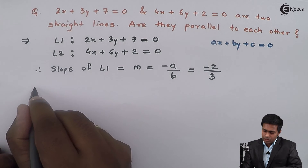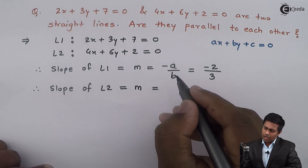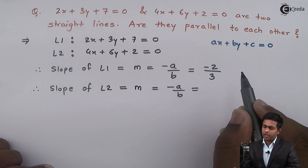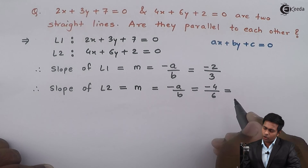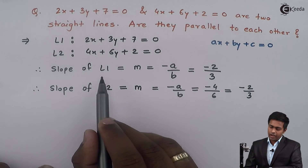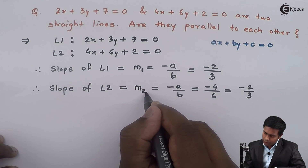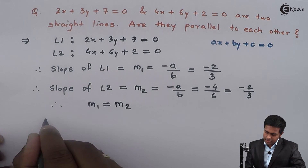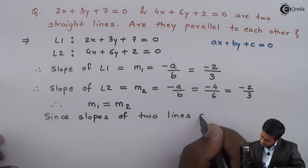Similarly, we will find out the slope of the second line. The slope of L2 is also given by the same formula, since the second line is also in the form Ax plus By plus C equal to 0. Comparing, A is 4 and B is 6. So we get minus 4 upon 6, which simplifies to minus 2 upon 3. Now, the slope of line number 1 and line number 2 are the same. Calling them M1 and M2, we have M1 equal to M2.